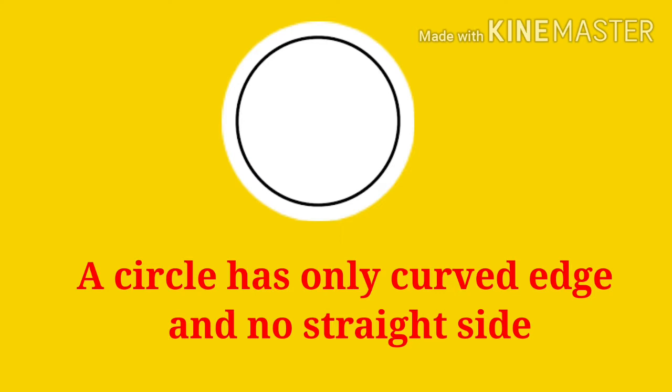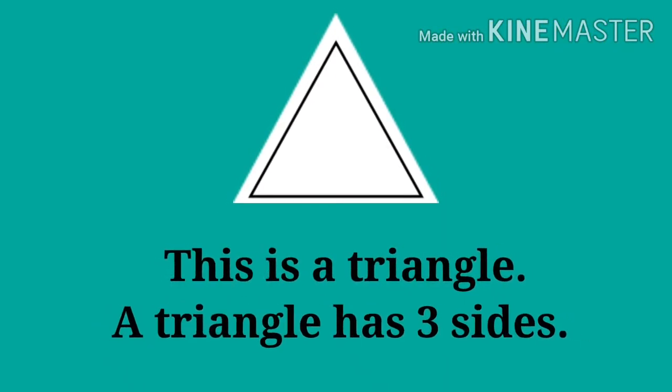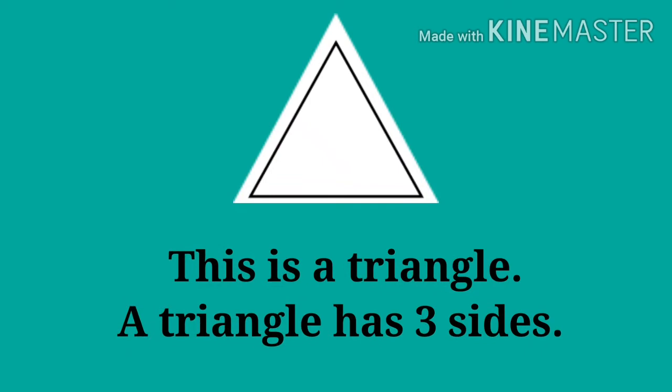Do you remember what is this? Yes, very good! This is a triangle, and the triangle has three sides. A rectangle or square has four sides.